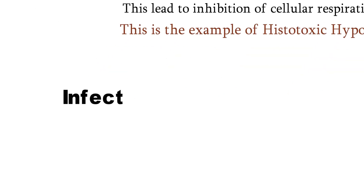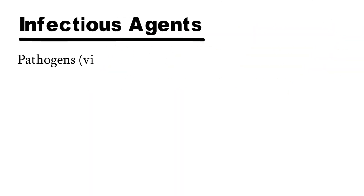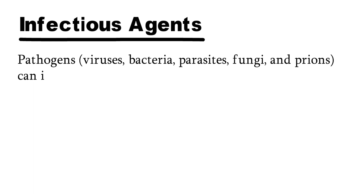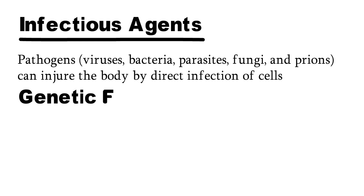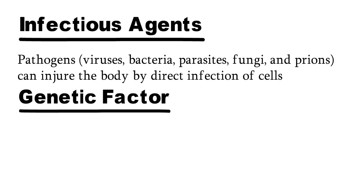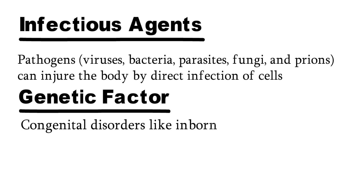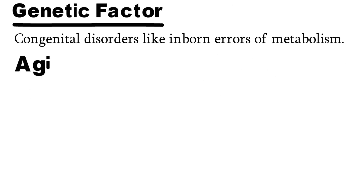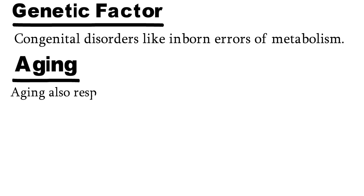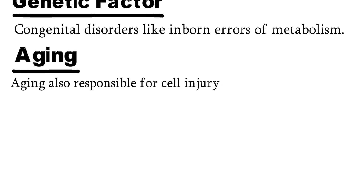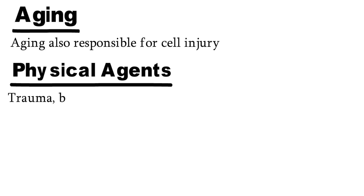Now we have completed the hypoxia topic. The third cause of cell injury is infectious agents — pathogens can directly damage the cell or may do so through toxins. The fourth cause is genetic factors — congenital disorders like inborn errors of metabolism cause cell injury, where the body cannot take energy from food due to a defect in specific proteins responsible for breakdown of food. The fifth cause is aging — due to aging, free radical injury increases, which is responsible for cell injury. The sixth cause is physical agents — like trauma, burn, radiation, etc.